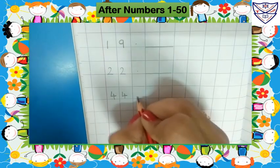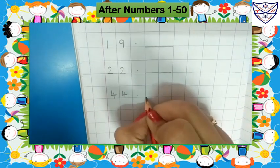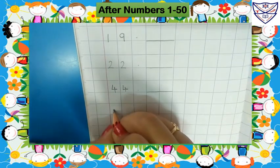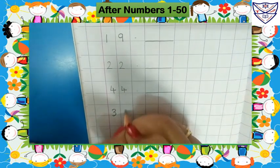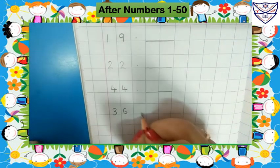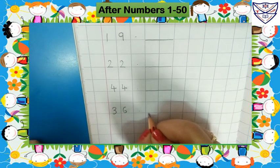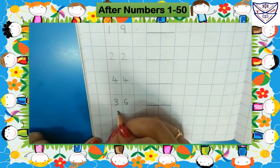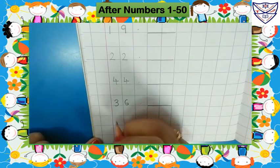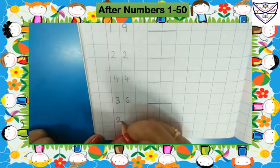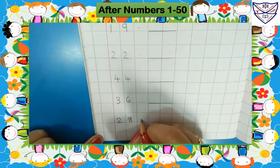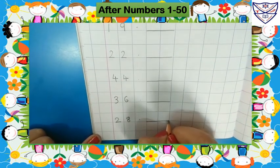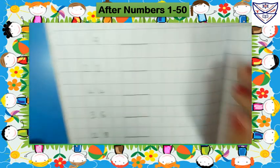Leave one box, put here small dash, leave one line, write here 36. Leave one box, put here small dash, leave one line, write here 28. Leave one box, put here small dash. Next page. Write here 47.